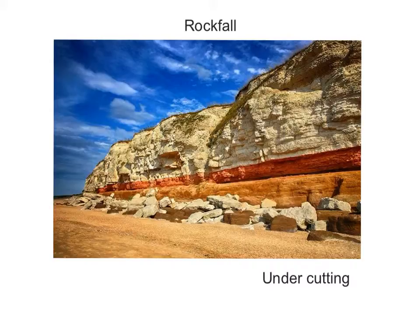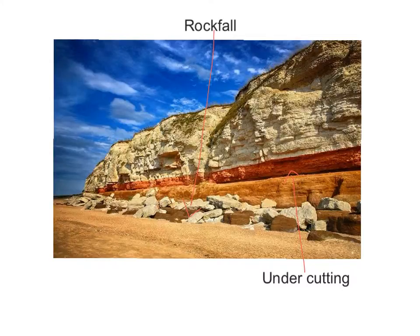This is a lovely cliff line at Hunstanton in North Norfolk, England. There is clear evidence of rockfall here, probably caused by undercutting of a relatively softer geology below. And those with very keen eyes — what can you see at the top? You can see some weathering going on, probably biological weathering, which helps to weaken the top of the cliff and encourages further erosion below.